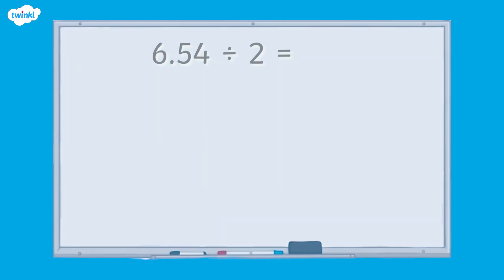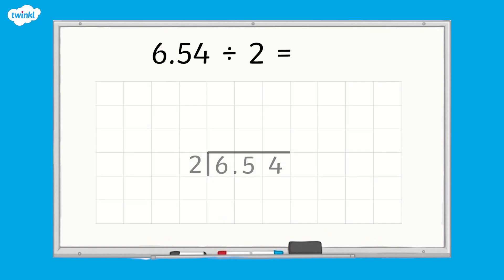Now it's time to look at another problem, but this time we're only going to use the short division method. 6.54 divided by 2. If we divide six ones into two equal groups, there are three ones in each group — 6 divided by 2 equals 3. We can record three above the six ones in our short division method.